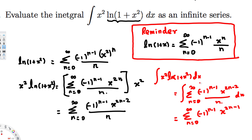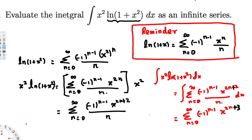Actually there is a correction here: the combined power was plus 2, so that's x^(2n+2). When we integrate, we add 1 more to get x^(2n+3), and divide by that power. The denominator becomes n times (2n+3). So our final answer is Σ from n=0 to ∞ of (-1)^(n-1) · x^(2n+3) / [n(2n+3)] plus a constant. I hope this helps — thanks for watching.